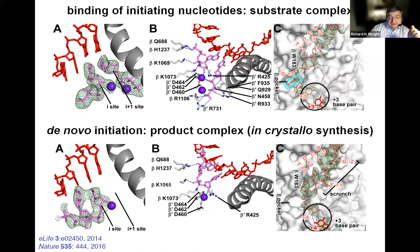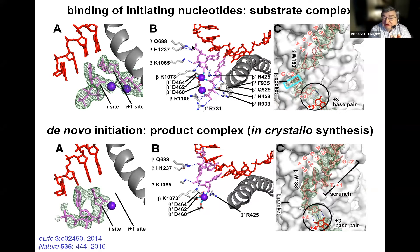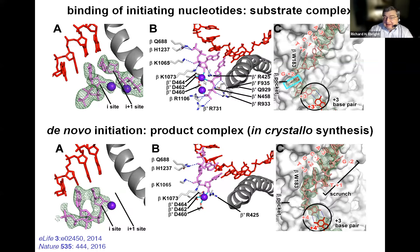As an example, if we start with the same crystals and soak into them two nucleotides—an initiating nucleotide and a non-hydrolyzable analog of an extending nucleotide—we are able to define the structure of the substrate complex that yields de novo initiation with mononucleotides. We are able to see the formation of a bimetal active center that catalyzes phosphodiester bond formation, with one metal being always present on the enzyme and a second metal being brought in by the extending nucleotide.